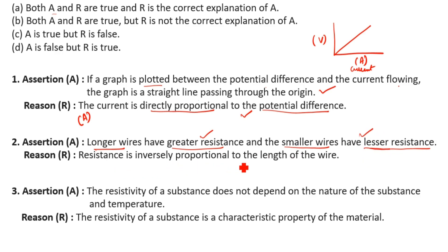Reason R: Resistance is inversely proportional to the length of the wire. No, resistance is directly proportional to the length of the wire. It is inversely proportional to the cross-sectional area. So this reason is wrong.